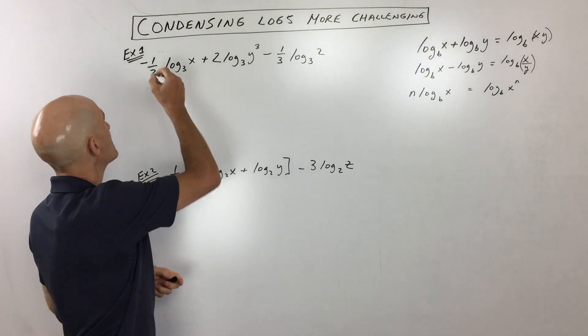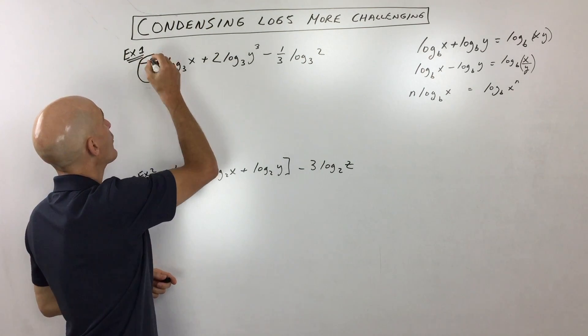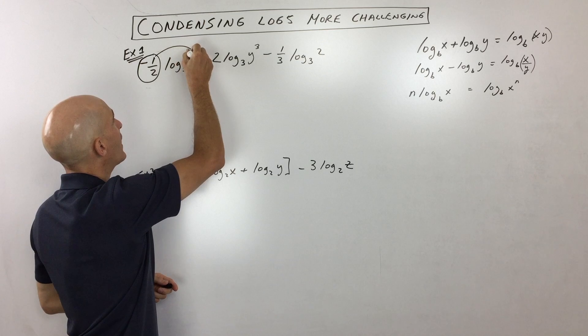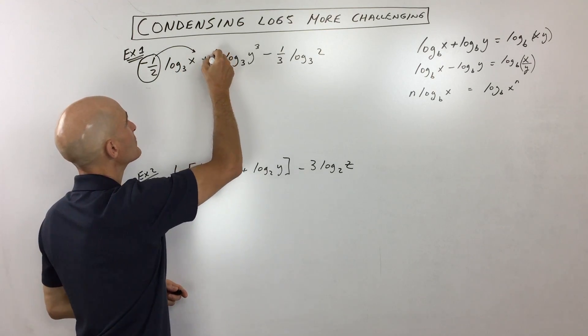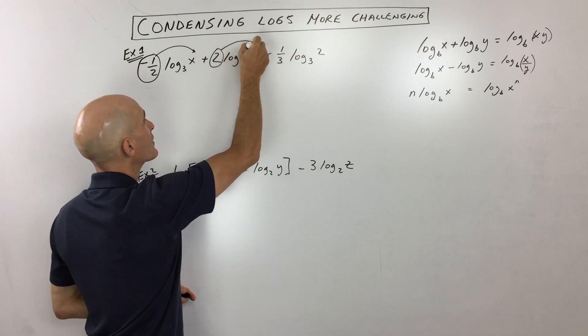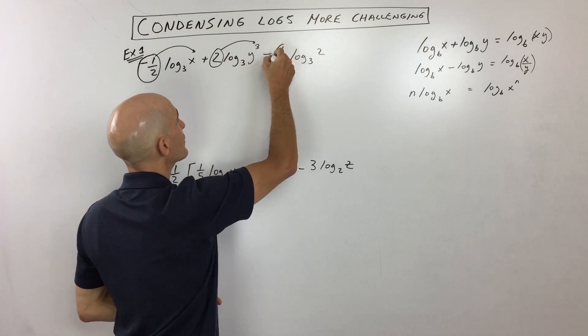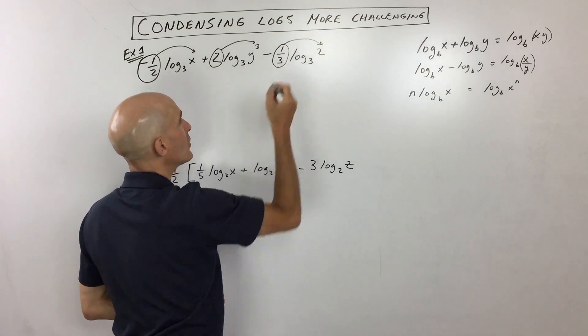Example 1 here, the first thing that I would do is I would do that power property by bringing that coefficient up as a power. So I'm going to take these coefficients, bring them up as powers, like so.